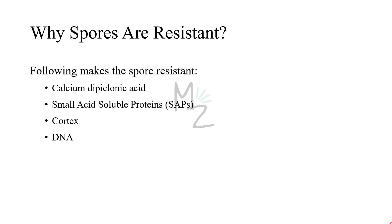Why are spores resistant? Calcium dipicolinic acid: as calcium enters the spore, water is removed, making it dehydrated and thus resistant. Dipicolinic acid stabilizes DNA and proteins. Small acid-soluble proteins saturate the endospore's DNA and protect it from heat, drying, chemicals, and radiation. The cortex also contributes, and finally the DNA itself has all information stored in it.